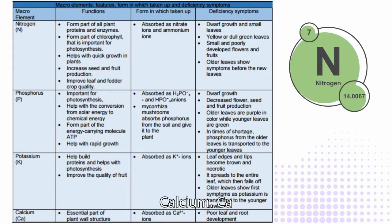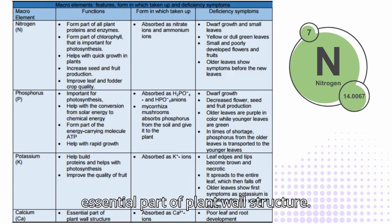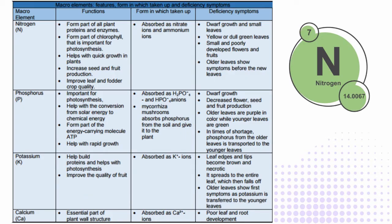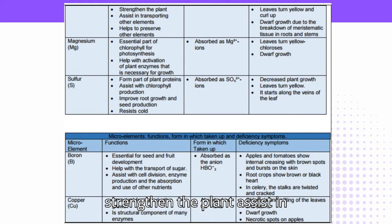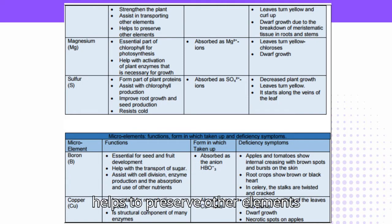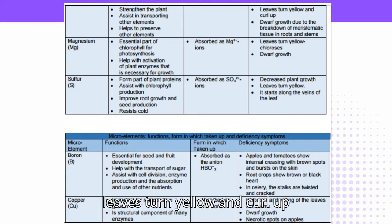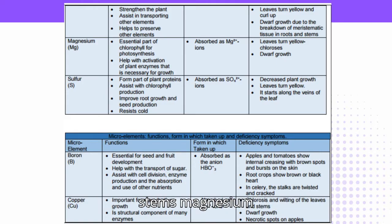Calcium (Ca): Essential part of plant cell wall structure. Absorbed as Ca²⁺ ions. Functions include strengthening the plant, assisting in transporting other elements, and helping to preserve other elements. Deficiency symptoms: poor leaf and root development, leaves turn yellow and curl up, dwarf growth due to the breakdown of meristematic tissue in roots and stems.